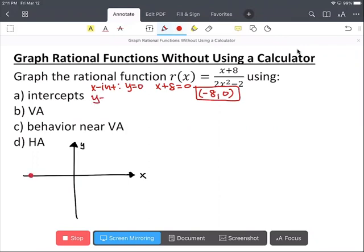In order to find y-intercept, we can set x equal to zero, which is zero plus eight over zero minus two. Then we have a zero comma negative four as our y-intercept.